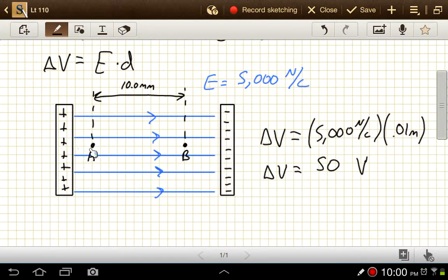It would move this direction as things move in, move down in terms of energy, in terms of electric potential. So A is 50 volts higher than B.